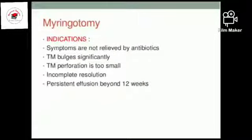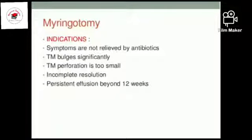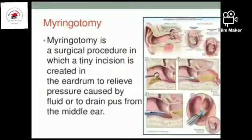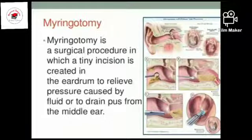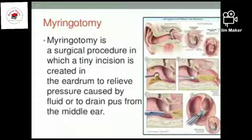Next, moving forward to myringotomy. There are some indications for this procedure: if symptoms are not relieved from antibiotics; if the tympanic membrane is bulging; tympanic membrane perforation is too small; incomplete resolution; persistent effusion beyond 12 weeks with no treatment; or continuous pus formation. Myringotomy is a procedure in which a small hole is created in the eardrum to drain out fluid — for example, water, blood, or any kind of pus. Tympanostomy tubes are placed to equalize pressure, because the Eustachian tube is obstructed and not functioning — the main function being ear pressure balance.